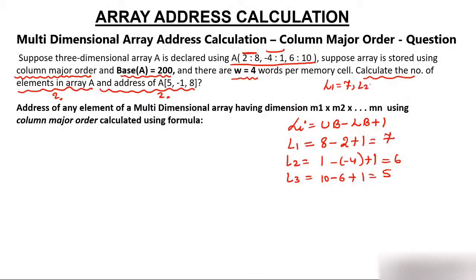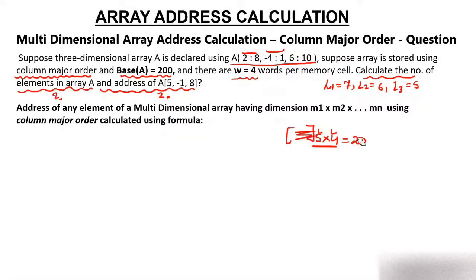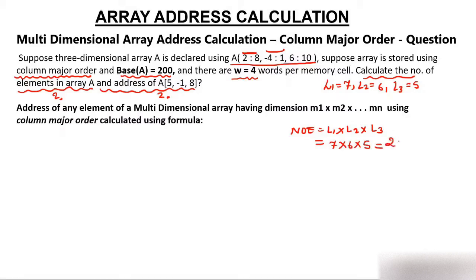With L1 = 7, L2 = 6, L3 = 5 calculated, the number of elements is L1 × L2 × L3 = 7 × 6 × 5 = 210. Just as a 5×4 matrix has 20 elements (5 × 4), here the product of the three lengths gives 210 elements in the array.